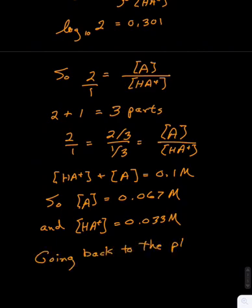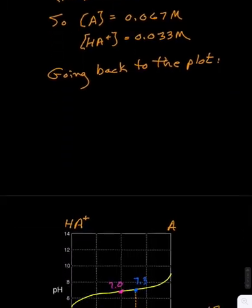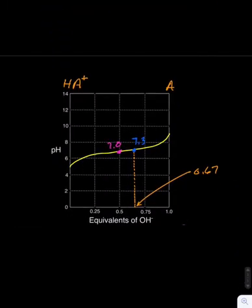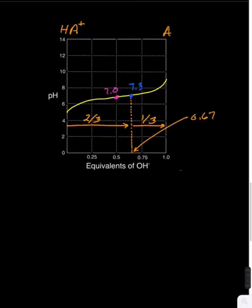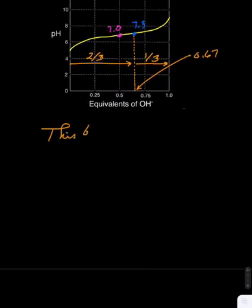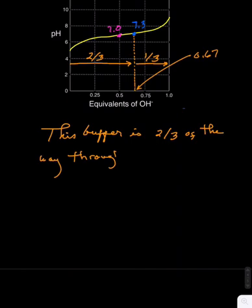Going back to our titration curve, we now see readily that our pH of 7.3 really does lie at 0.67 on the x-axis. That is, we are 2 thirds of the way through the titration at pH 7.3, with just 1 third to go. This buffer solution is 2 thirds of the way through the titration, that is, it is 2 thirds A and 1 third HA+.